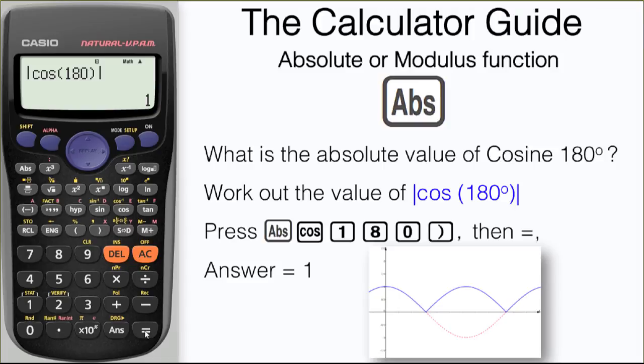If we have a look at the graph of the function, we can see that it's reflected in the x-axis. The original graph is displayed with the red dotted line.